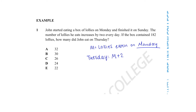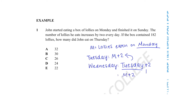Following this same rule, the number of lollies John eats on Wednesday is Tuesday plus 2. We already have an equation for Tuesday in terms of m, which is m plus 2. Therefore Wednesday would be m plus 2 plus 2, which is m plus 4. Once again following this same pattern for Thursday, which would be Wednesday plus 2. Since we know Wednesday is m plus 4, Thursday would therefore be m plus 4 plus 2, which is m plus 6.